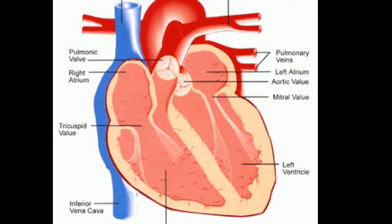The heart has four chambers. The upper chambers are known as the atrium, and the lower chambers are known as the ventricles. You have the right atrium, right ventricle, left atrium, and left ventricle.